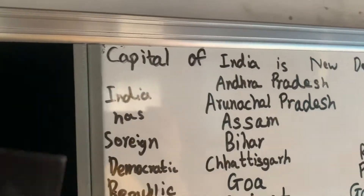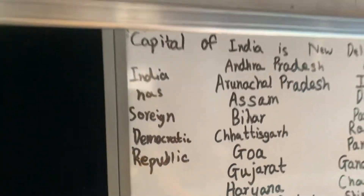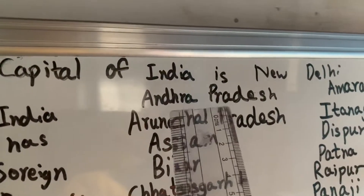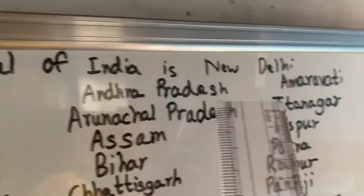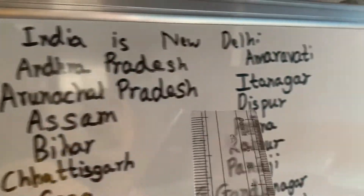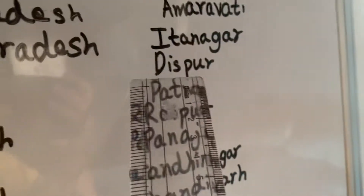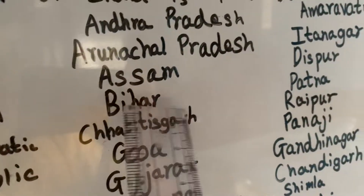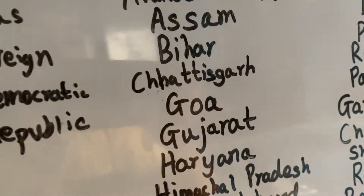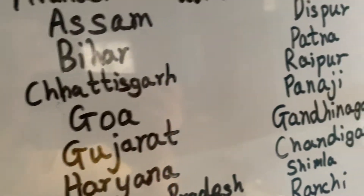India has sovereign democratic republics. Now let's look at states and their capitals. First, Andhra Pradesh — capital Amaravati. Arunachal Pradesh — capital Itanagar. Assam — capital Dispur. Bihar — capital Patna. Chhattisgarh — capital Raipur. Goa — capital Panaji.